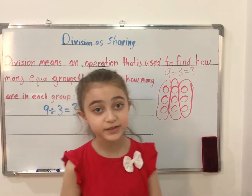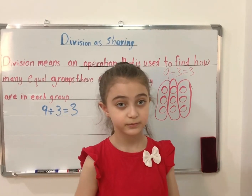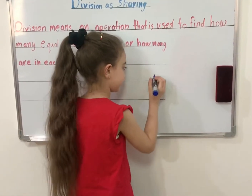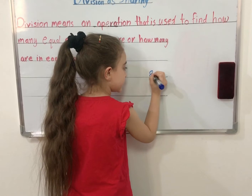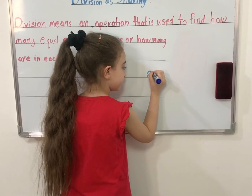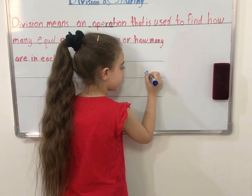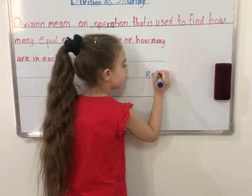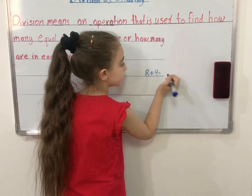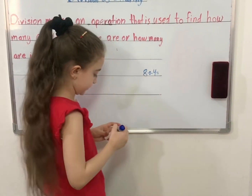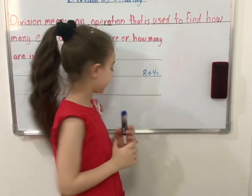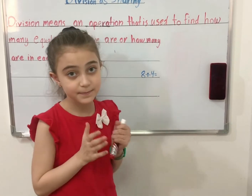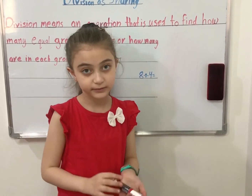Another example. 8 divided by 4. Okay, let's make our array.